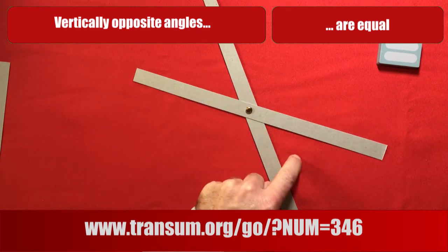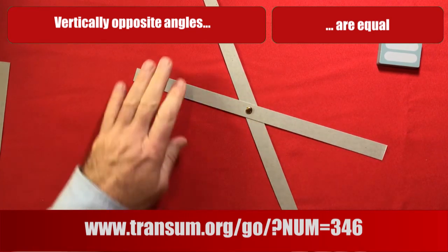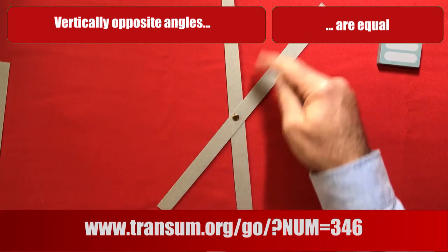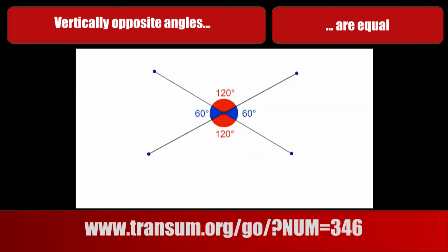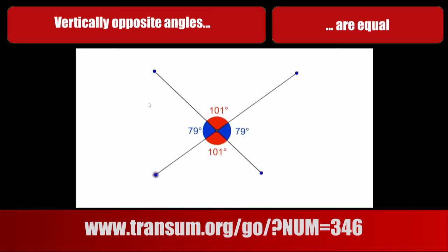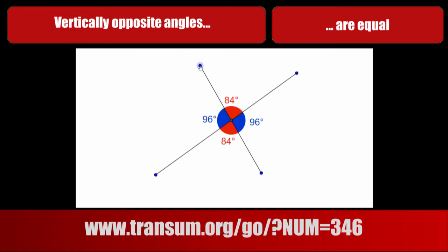That one is equal to that one, and this one is equal to this one. The ones opposite are equal. With numbers: our vertically opposite angles are the same. The two blue angles are both 60 degrees. The two red obtuse angles are both 120 degrees. It doesn't matter where I position these intersecting lines — the vertically opposite angles are always exactly the same size.